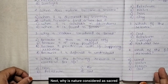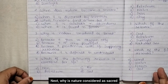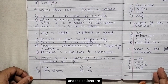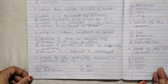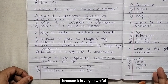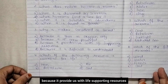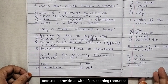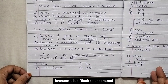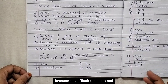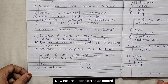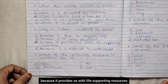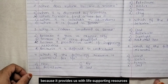Next: why is nature considered as sacred? The options are because it gives us oxygen only, because it is very powerful, because it provides us with life supporting resources, because it is difficult to understand. Nature is considered as sacred because it provides us with life supporting resources.